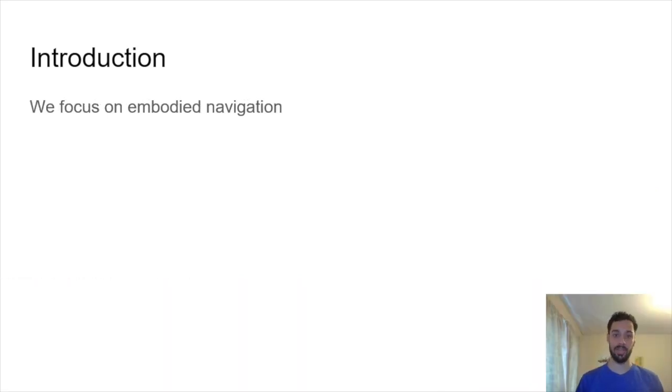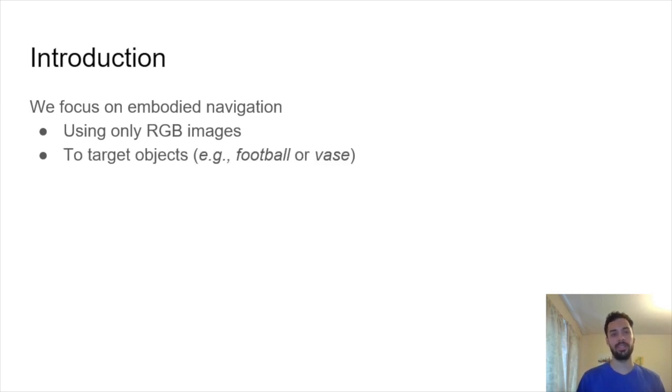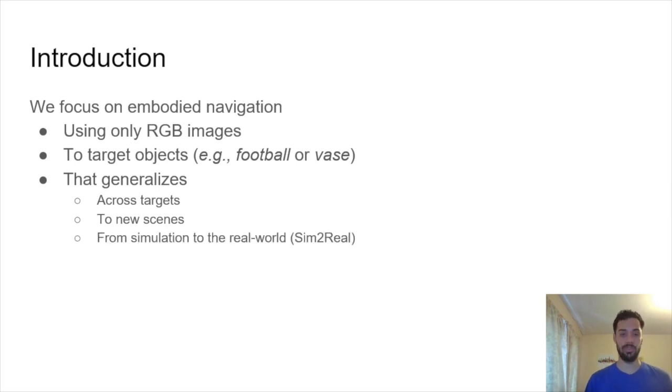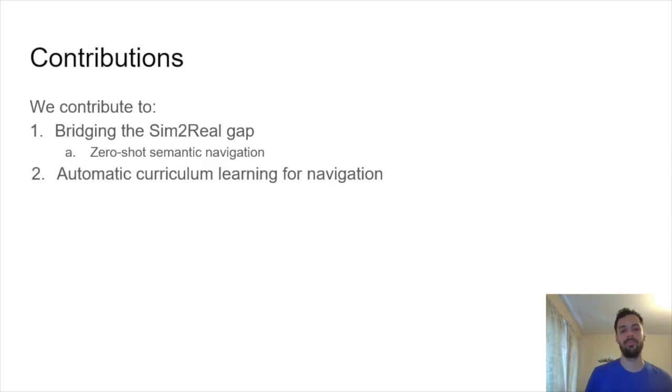Our focus is on embodied navigation using only RGB images to target objects, for example a football or a base. These are specified semantically. We want an approach that generalizes across targets, generalizes to new scenes, as well as some simulation to the real world, a property we call Sim2Real. We have two main contributions: bridging the Sim2Real gap, which gives us this benefit called zero-shot semantic navigation, and we also contribute to automatic curriculum learning for navigation.